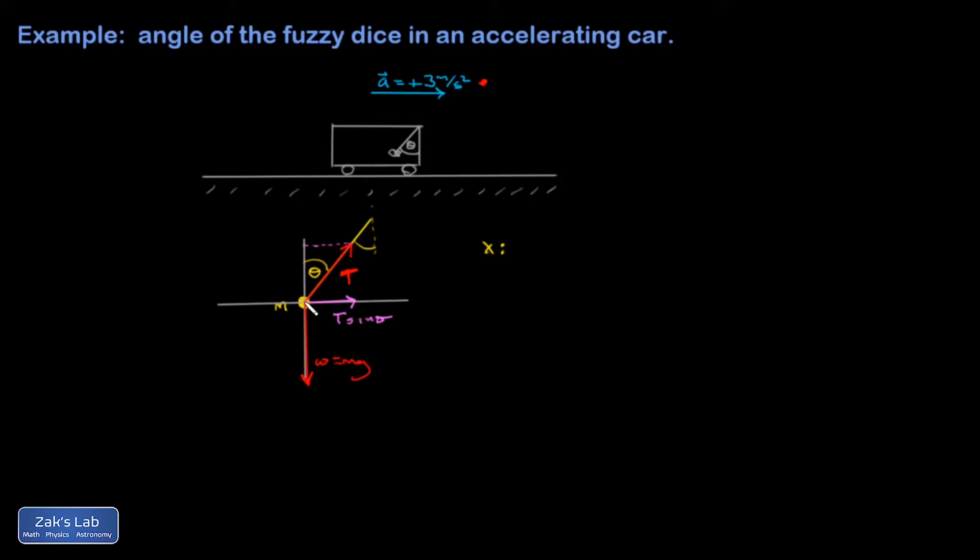And then cosine is that vertical piece. So that's a T cosine theta.